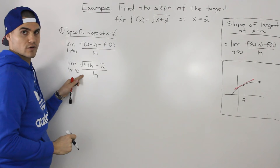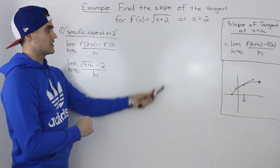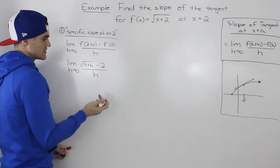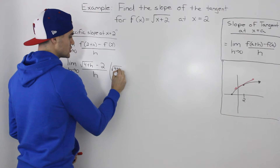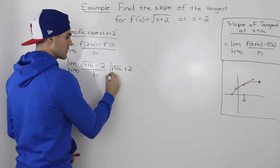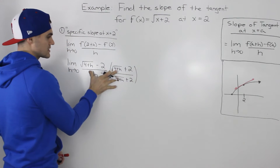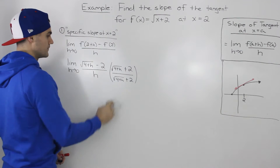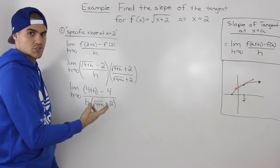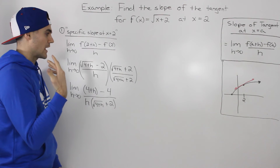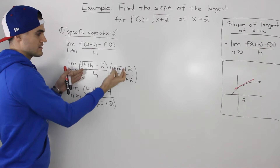We can't plug in 0 for h because we still have h in the denominator, and the way to get rid of it when dealing with square root functions is to rationalize the numerator. So we take the conjugate of the numerator, which is the square root of 4 plus h plus 2 — we switch that middle sign — all over the square root of 4 plus h plus 2. It's like multiplying the expression by 1. When we multiply the numerators, we're multiplying a two-term expression by its conjugate.